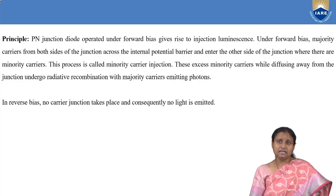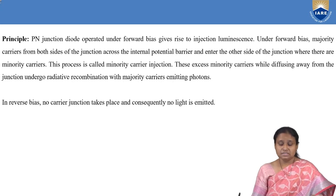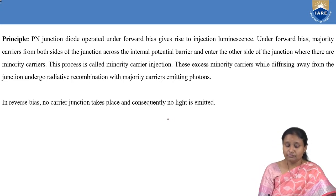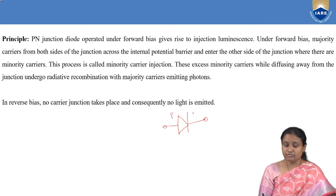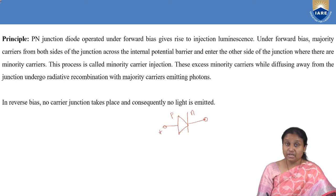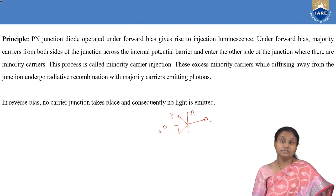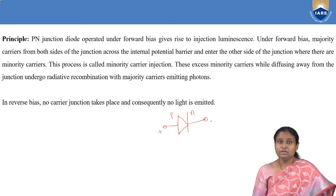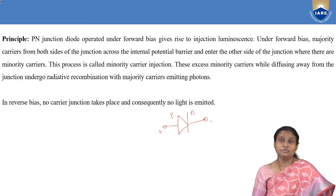First we will see what exactly is our LED. When we talk about our PN junction, the PN junction diode is represented by a triangle which is the P type, and then we have one vertical line which represents the N type. When talking about LED, we focus completely on only one type of biasing which is forward biasing.